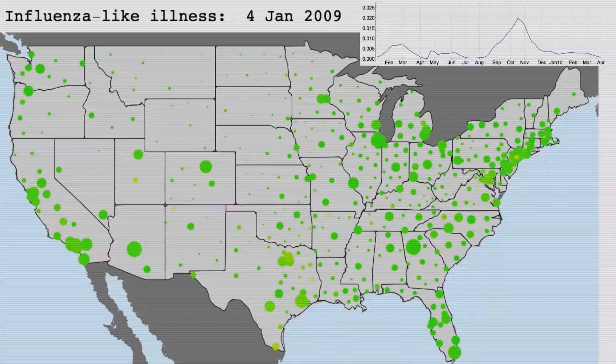So green is essentially no influenza, and moving through to red and then purple are very high levels of influenza. The movie starts in January 2009. The first thing we see is seasonal influenza. Then in April, news hits of the pandemic.